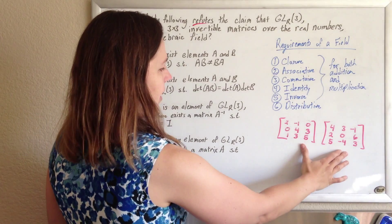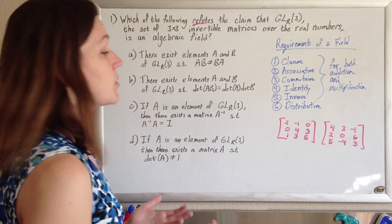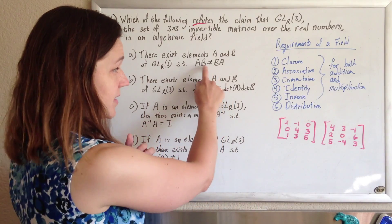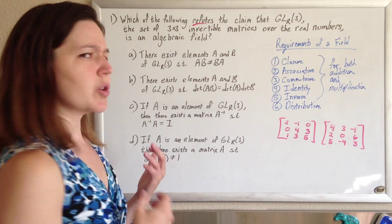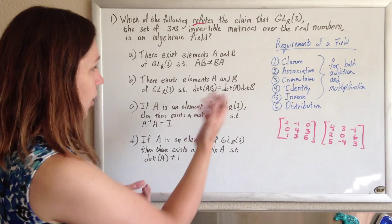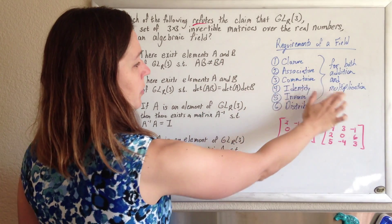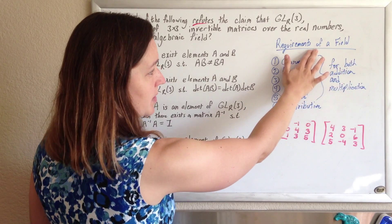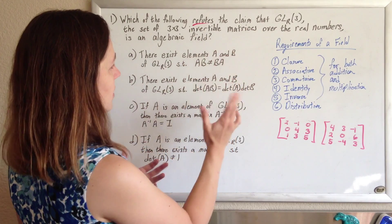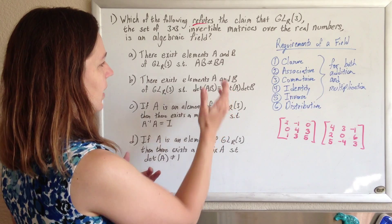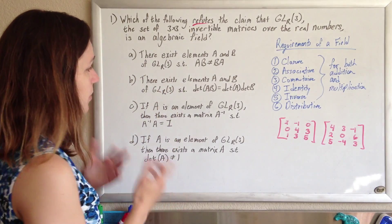Now we think: if I have matrices A and B, does A times B necessarily equal B times A? We're going to go over matrices later, but this is not true. If you multiply this matrix by that one and that one by this one, you're not necessarily going to get the same thing. So I think we've found our answer right away. There are in fact matrices where A times B doesn't equal B times A, which violates the commutative property for multiplication — a requirement of a field — refuting the claim that these matrices are a field.